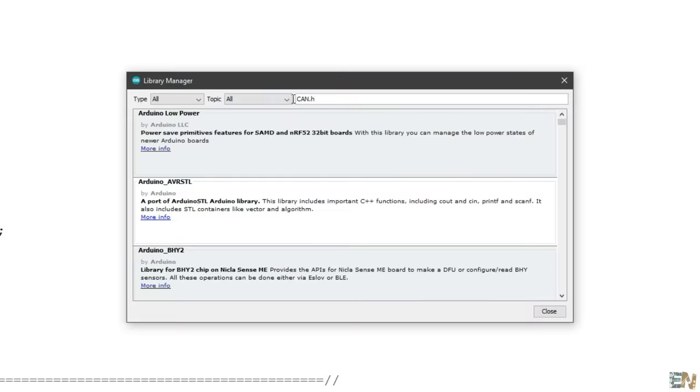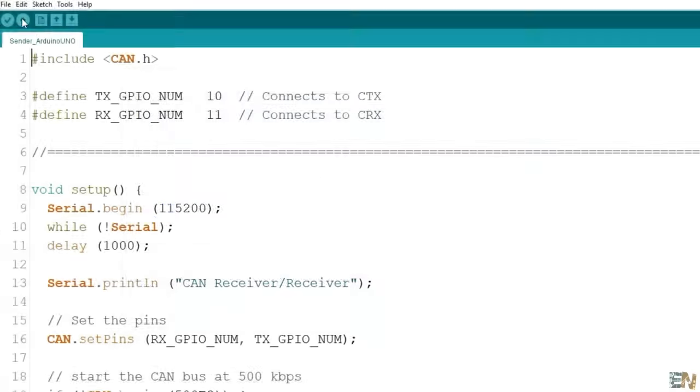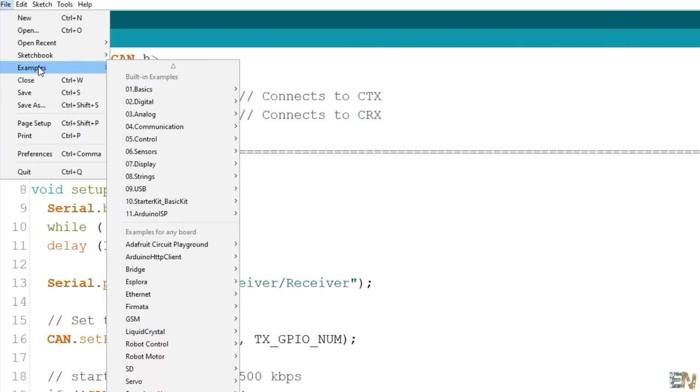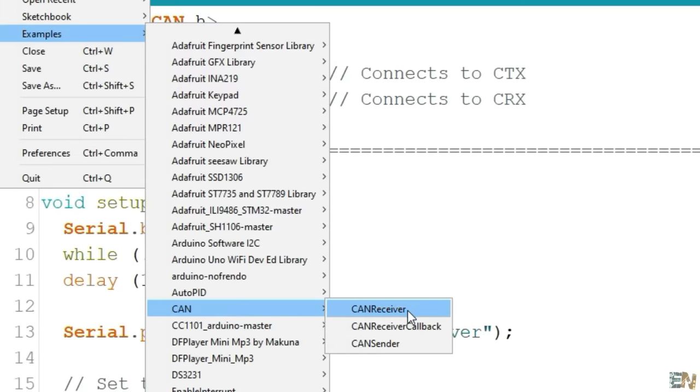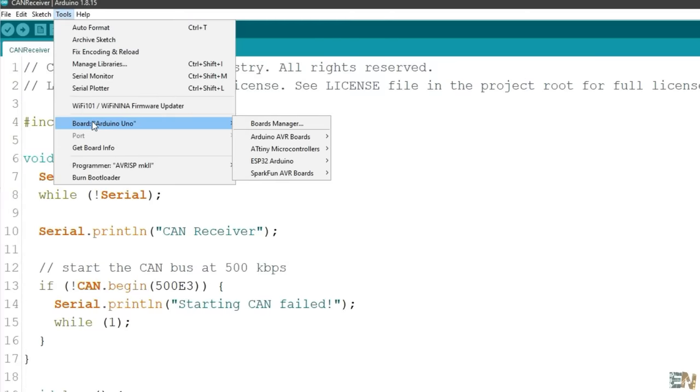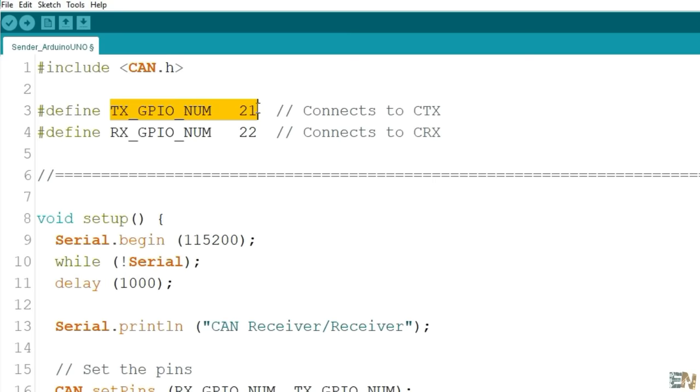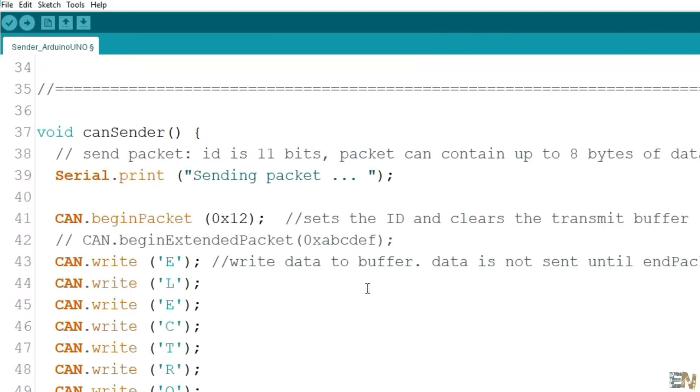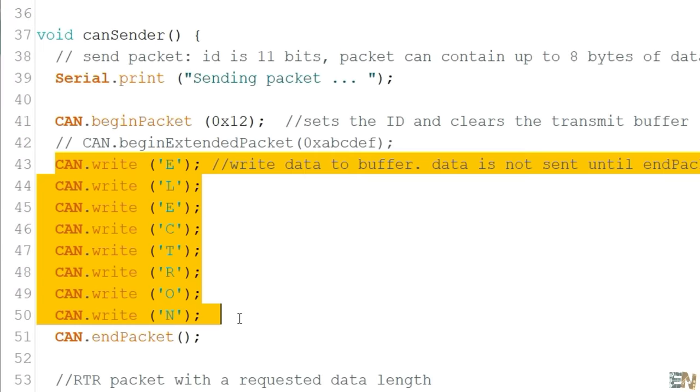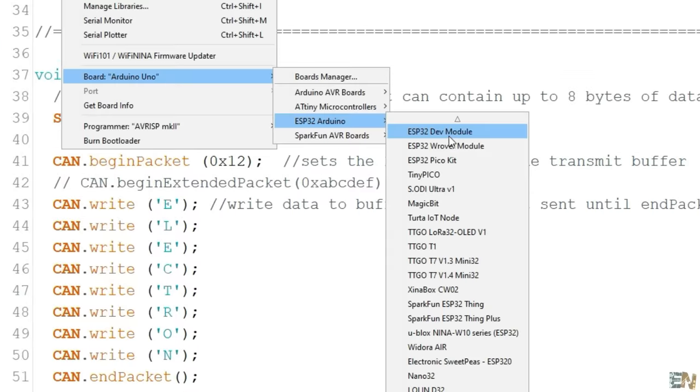In Arduino IDE we install this library that is called CAN.H that you could download from below. In examples, you have a code for CAN sender or CAN receiver. We upload the receiver code to the Arduino Uno but for the ESP32 copy this code from below the video. As you can see we define the ESP32 pins 21 and 22 for TX and RX. Then we send 8 bytes with the letters ELECTRON.